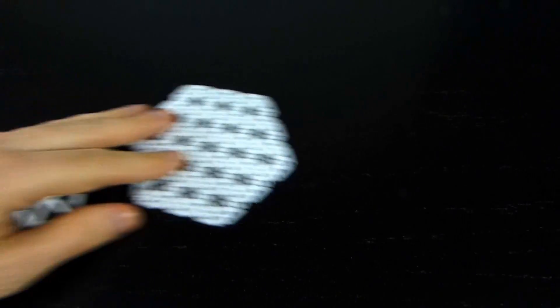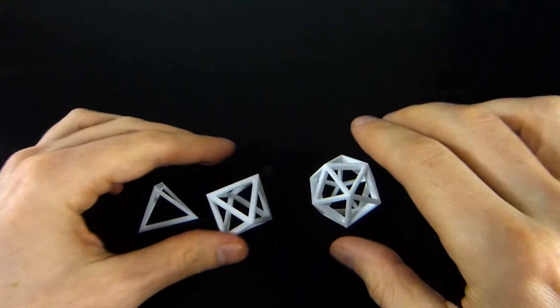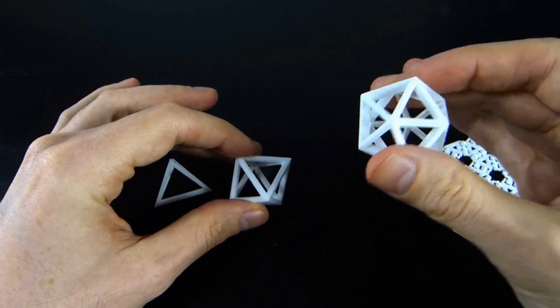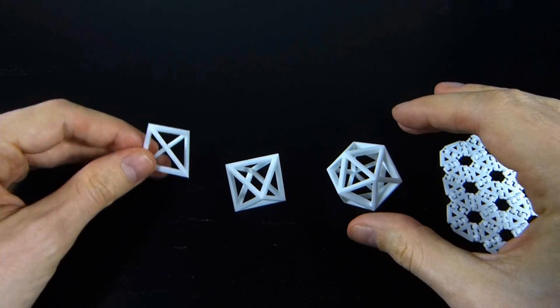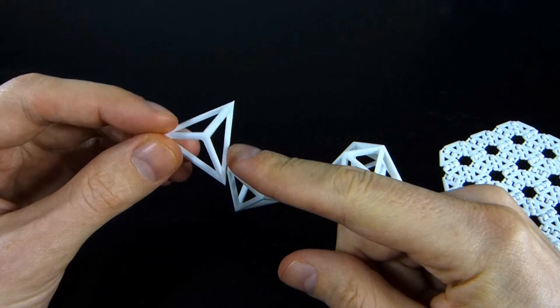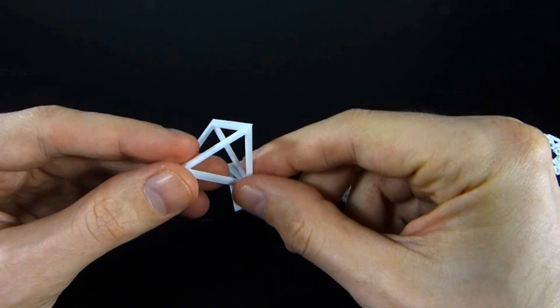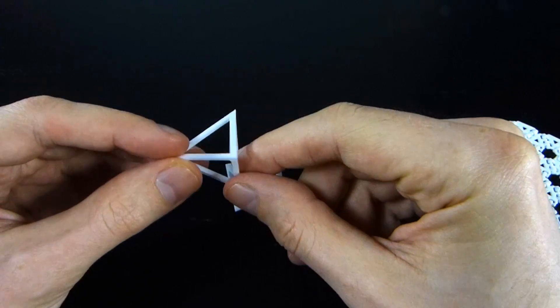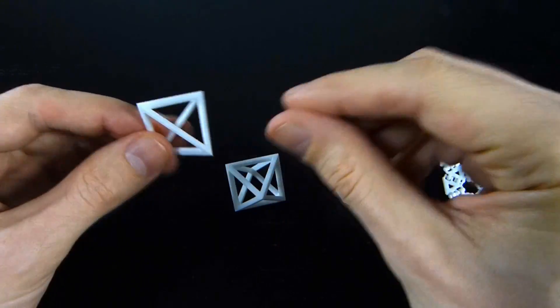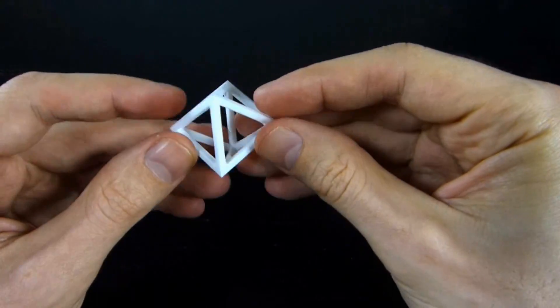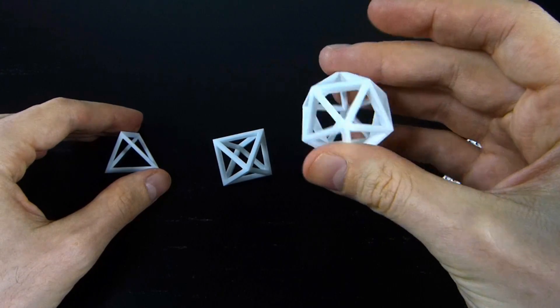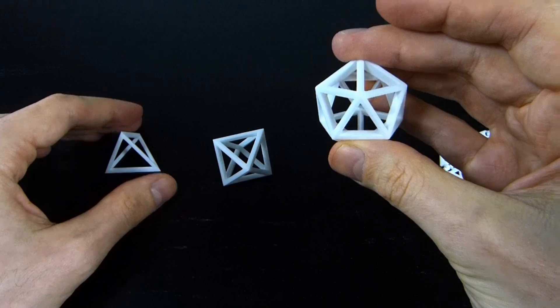So let's start with some of the regular polyhedra. These are the tetrahedron, the octahedron, and the icosahedron. So these are all the regular polyhedra that you can make out of triangles. This is what you get when you arrange three triangles around each vertex. This is what you get when you do four triangles around each vertex. The icosahedron is what you get when you arrange five around each vertex.